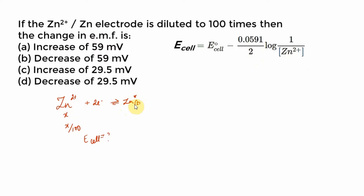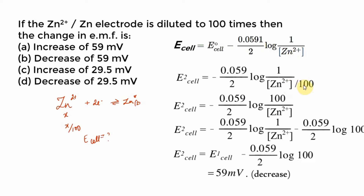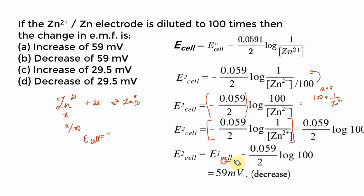After diluting by 100 times, the denominator becomes x/100, so 100 moves to the numerator. Log(100 × 1/[Zn²⁺]) = log(100) + log(1/[Zn²⁺]). The log(1/[Zn²⁺]) term is what we had as E1. The new term is −0.0591/2 × log(100). Log 100 = 2, and 2/2 cancels, giving −0.059 volts. So E_cell decreases by 59 millivolts compared to before. This pattern has come several times in JEE and NEET.